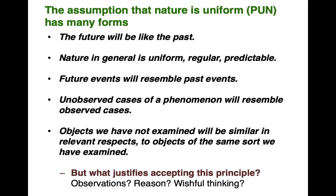I'm going to unpack his argument, but first let's look at the assumption that nature is uniform — called the principle of the uniformity of nature. It has many forms, but it boils down to the idea that the future will be like the past. Unobserved cases of a phenomenon will resemble observed cases. Objects we have not examined will be similar in relevant respects to objects of the same sort we have examined. But what justifies accepting this principle? Observations? Reason? Wishful thinking?